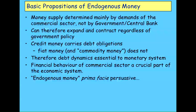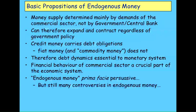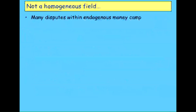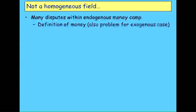I see the endogenous money case as quite persuasive at a prima facie level, but within that it's still a very early area. The first person to write on this in detail was Basil Moore, writing back in the late 60s and early 70s. It is still very much a nascent area — not easily worked out, and there are plenty of arguments within the field.